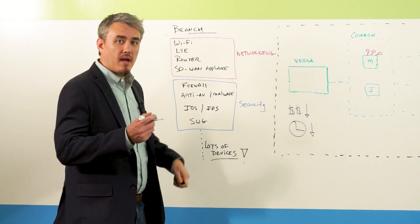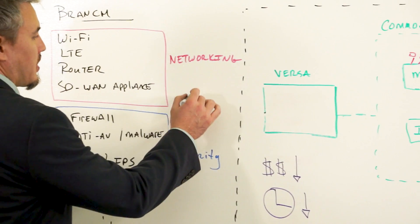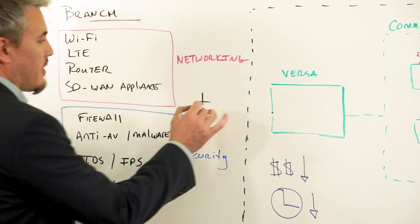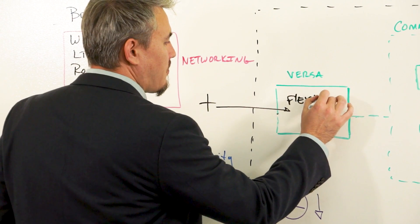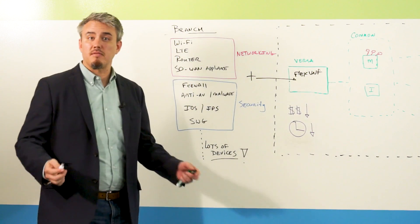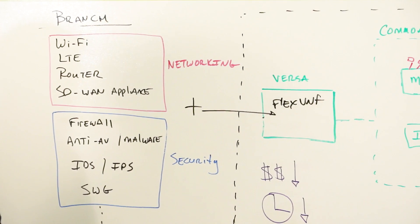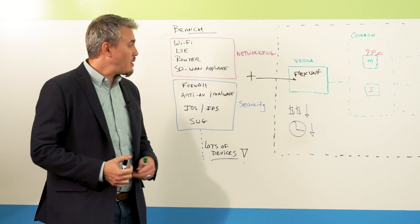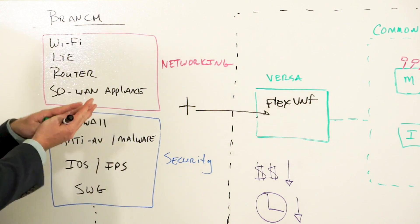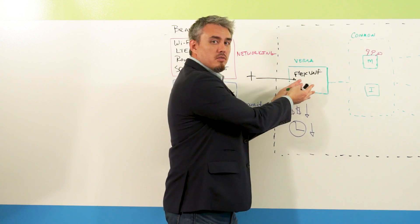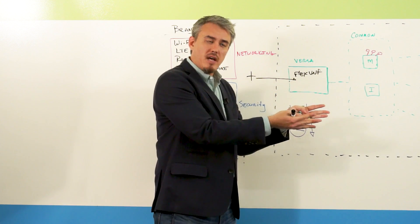So why Versa SD-WAN or why Versa? Well because we take networking and security and we bring them into a singular, unified software services platform called FlexVNF. FlexVNF is a multi-tenanted cloud-native networking and security software services platform. And so what it does is it consolidates all of this and puts into a single software package that we call FlexVNF.